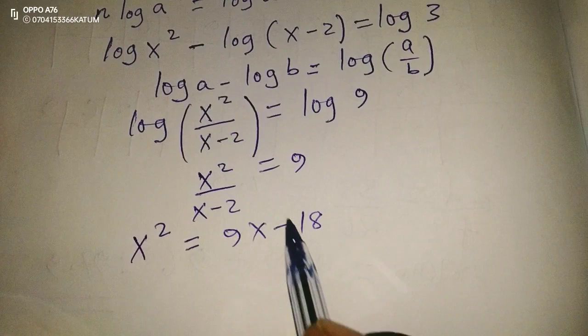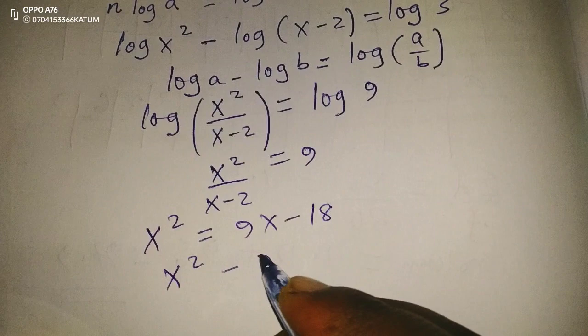Then now we rearrange the equation: x² minus 9x plus 18 equals 0.